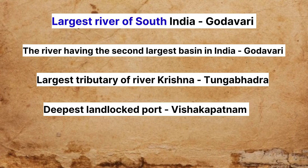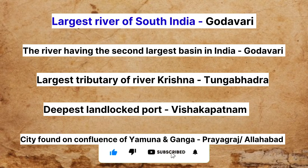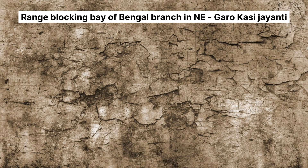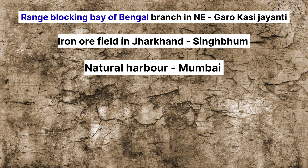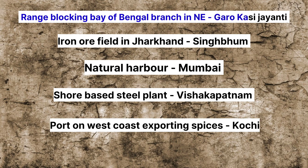The deepest landlocked port is Visakhapatnam. The city found at the confluence of the Yamuna and Ganga is Prayagraj or Allahabad. The ranges blocking the Bay of Bengal branch in Northeast India are the Garo, Khasi, and Jaintia Hills. The iron ore field in Jharkhand is Singhbhum. The natural harbour is Mumbai. The shore-based steel plant is Visakhapatnam. The port on the west coast exporting spices is Kochi.